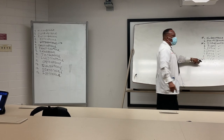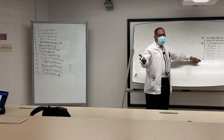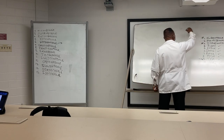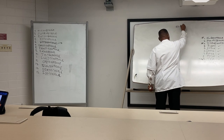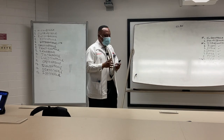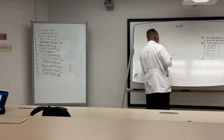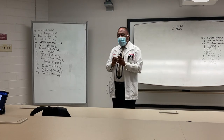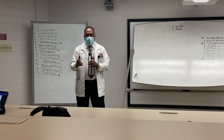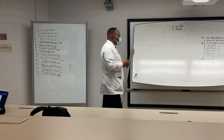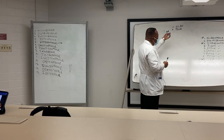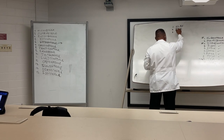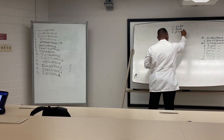Terconazole is just used for vulvovaginal candidiasis. All azoles can give you the GLIBS as adversities. All azoles can increase INR in a patient who is on Coumadin. All azoles, to some degree, can inhibit CYP3A4.